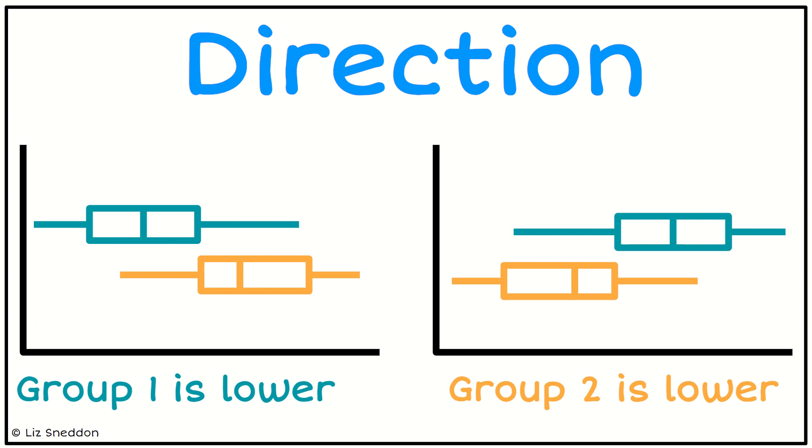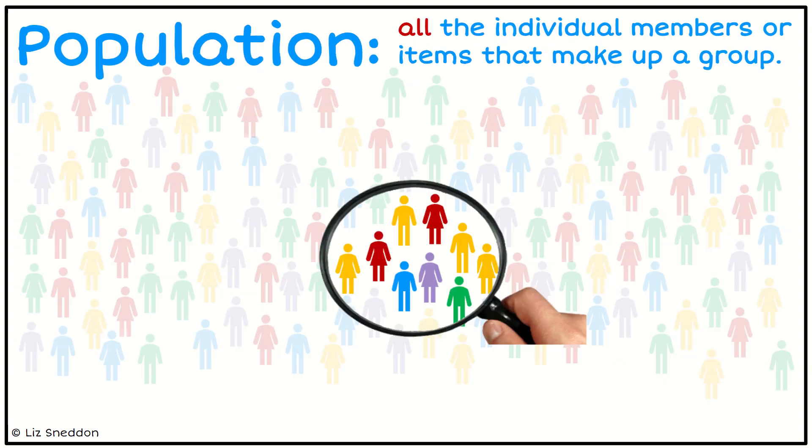So direction - here's an example. And so this is doing it as a box plot and showing you we're talking about whether group one is lower or group two is lower, so that's what we mean by direction - which one is bigger or smaller. Remember, our population is all of the members or our groups or items that fill up that group.